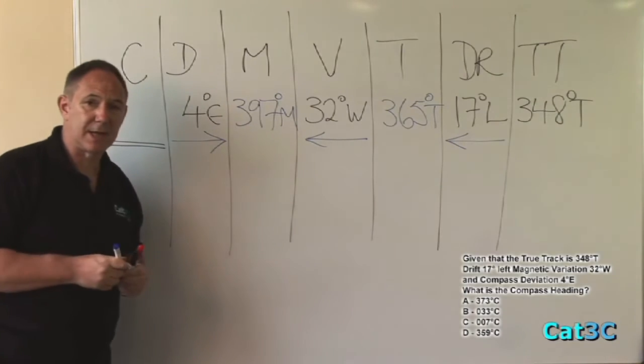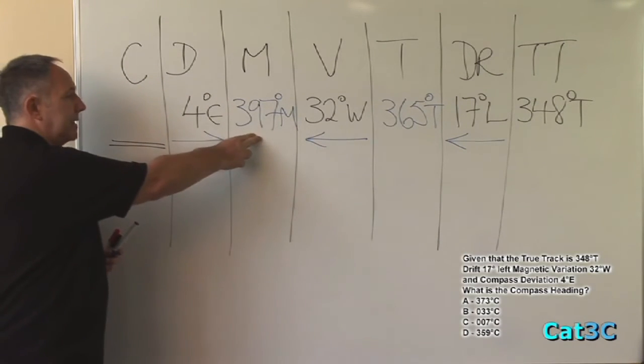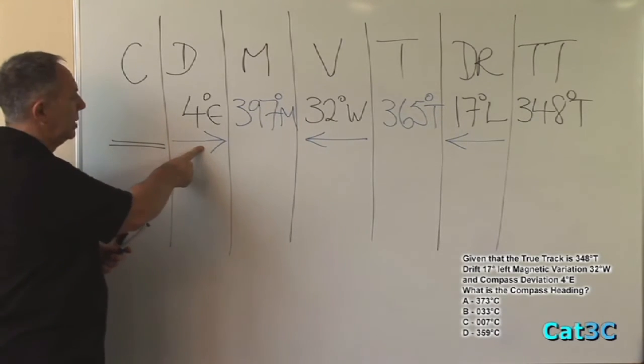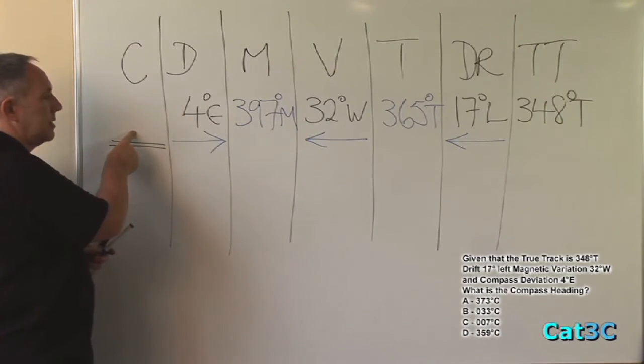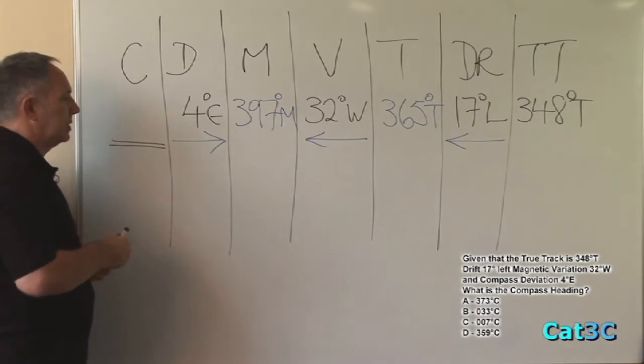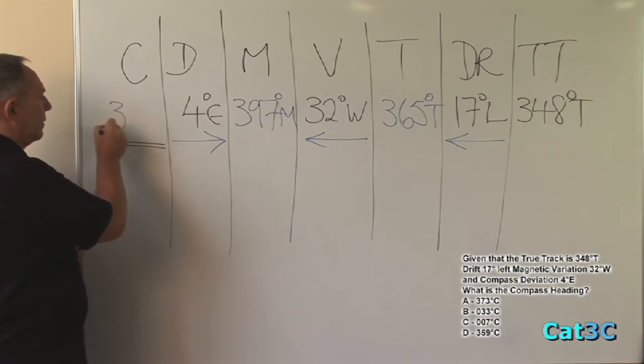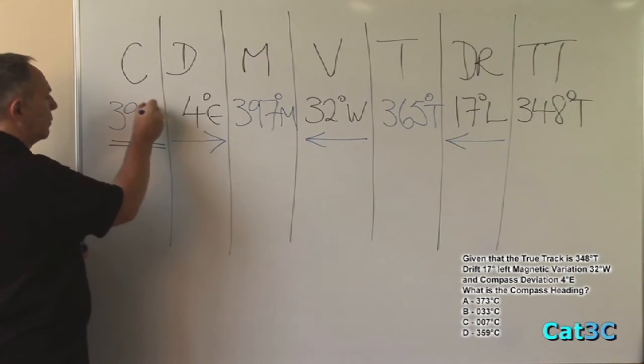The last part of the calculation is to go from magnetic heading to compass heading, via deviation. The arrow on this occasion points to the right, which tells me magnetic is greater than compass, by 4 degrees. So 397 minus 4 is 393 degrees compass.